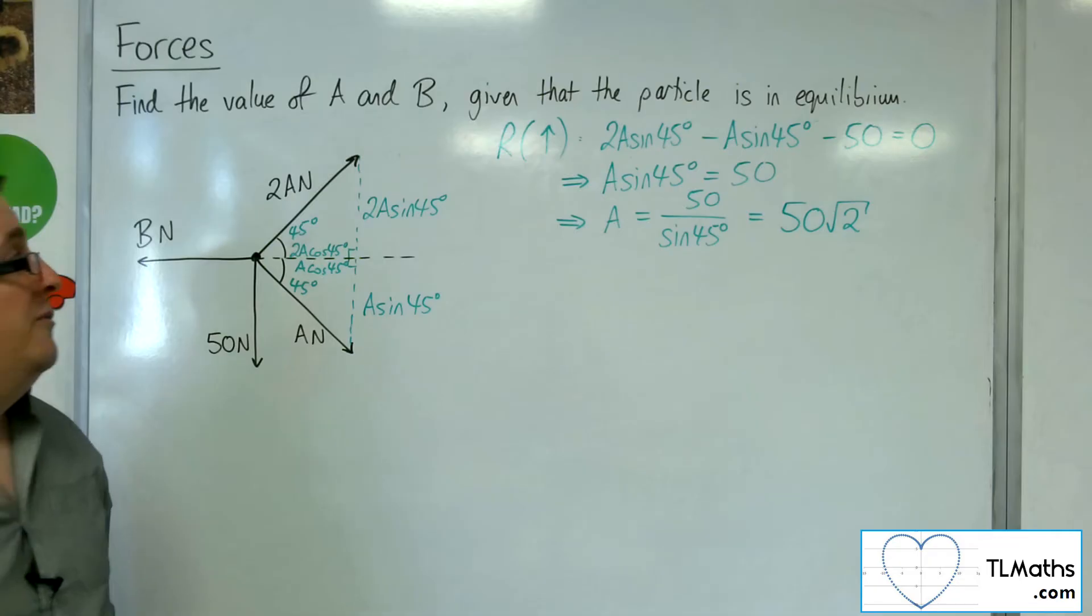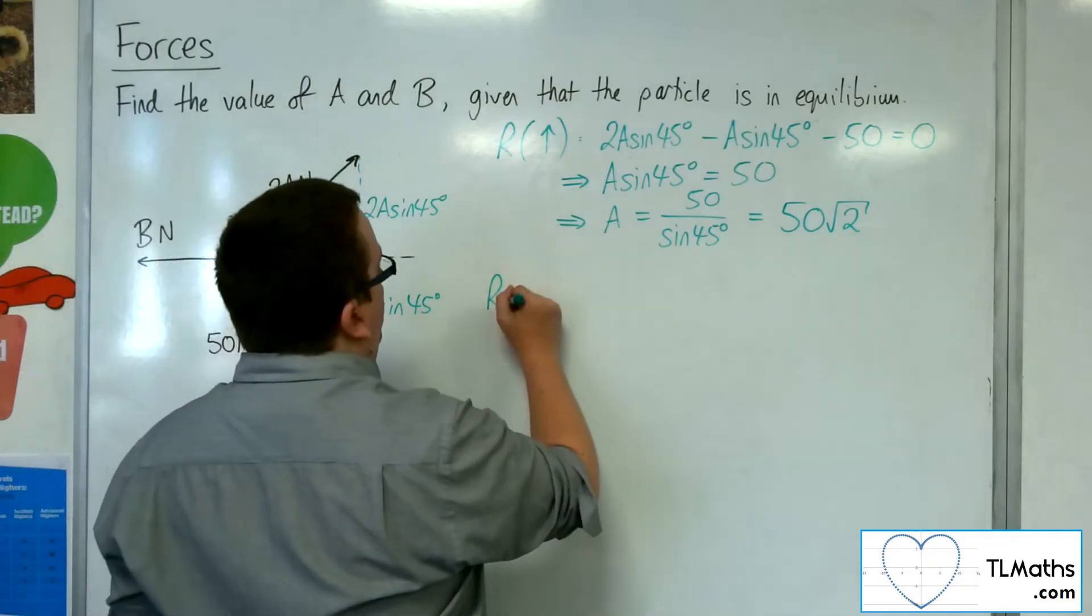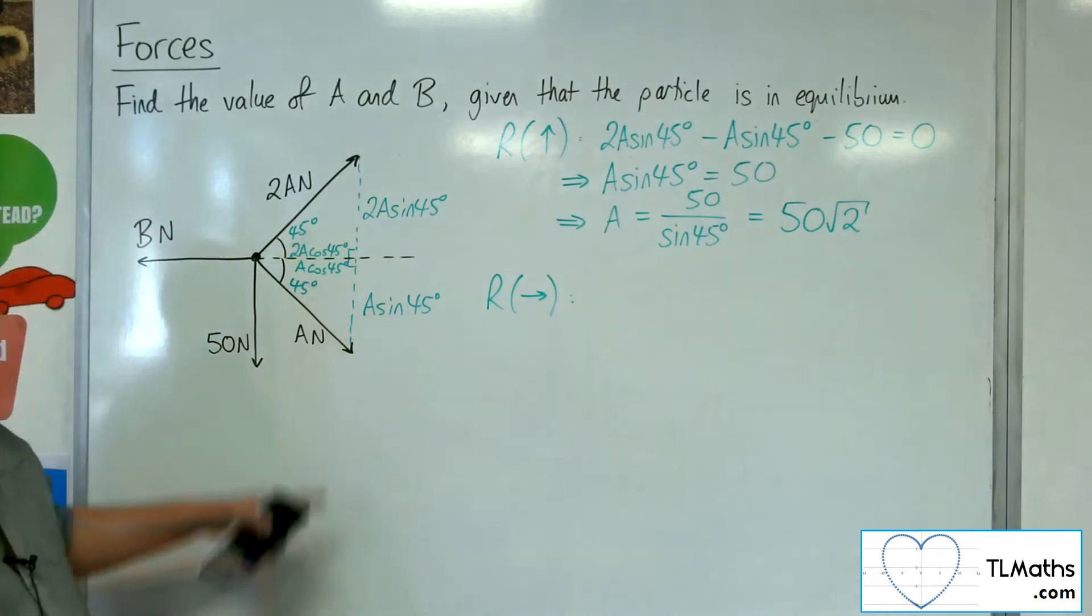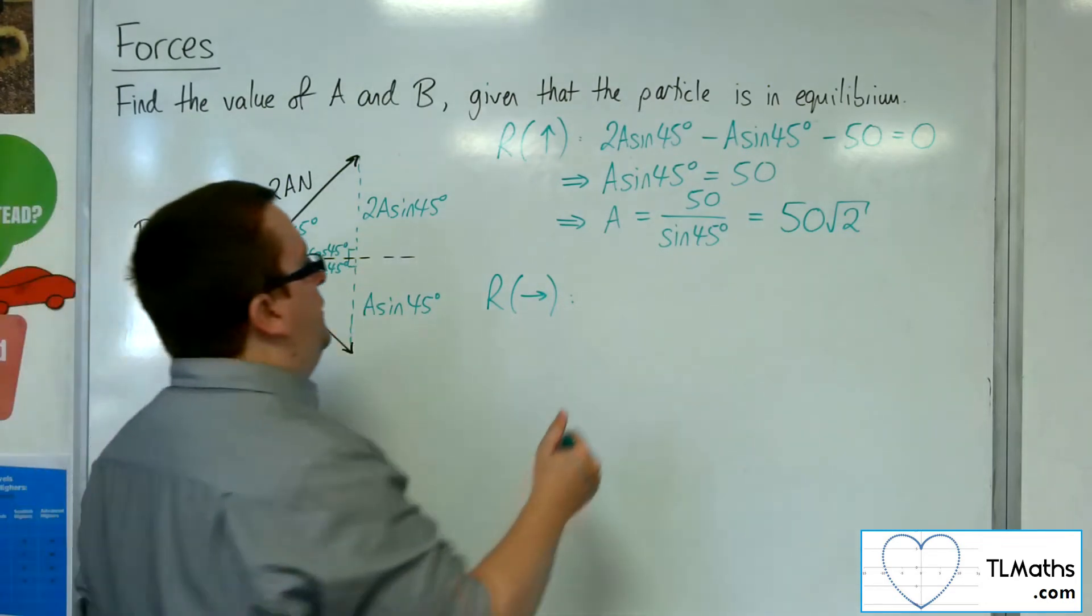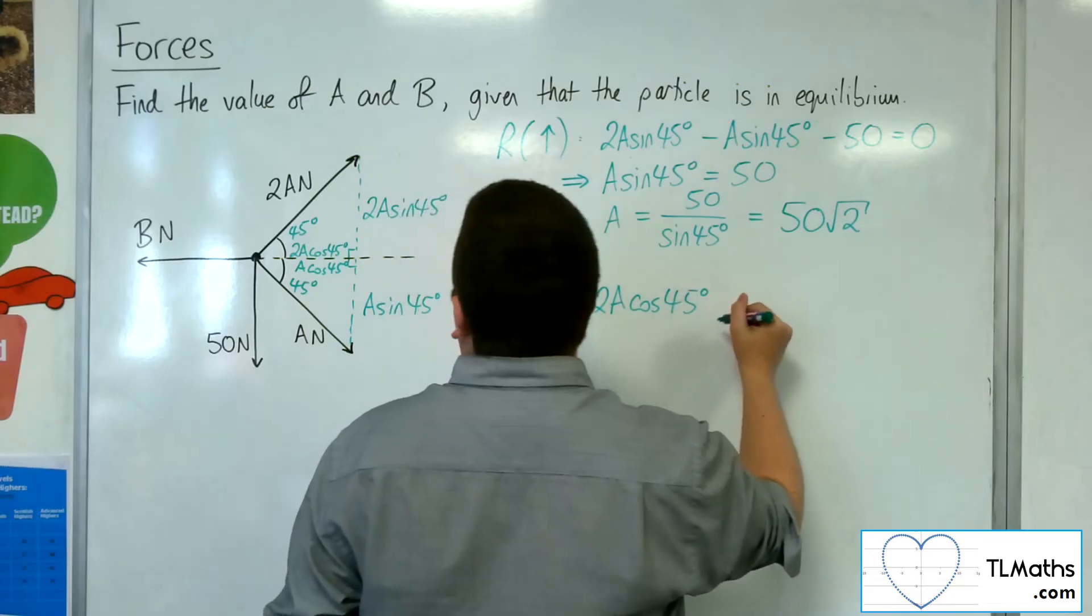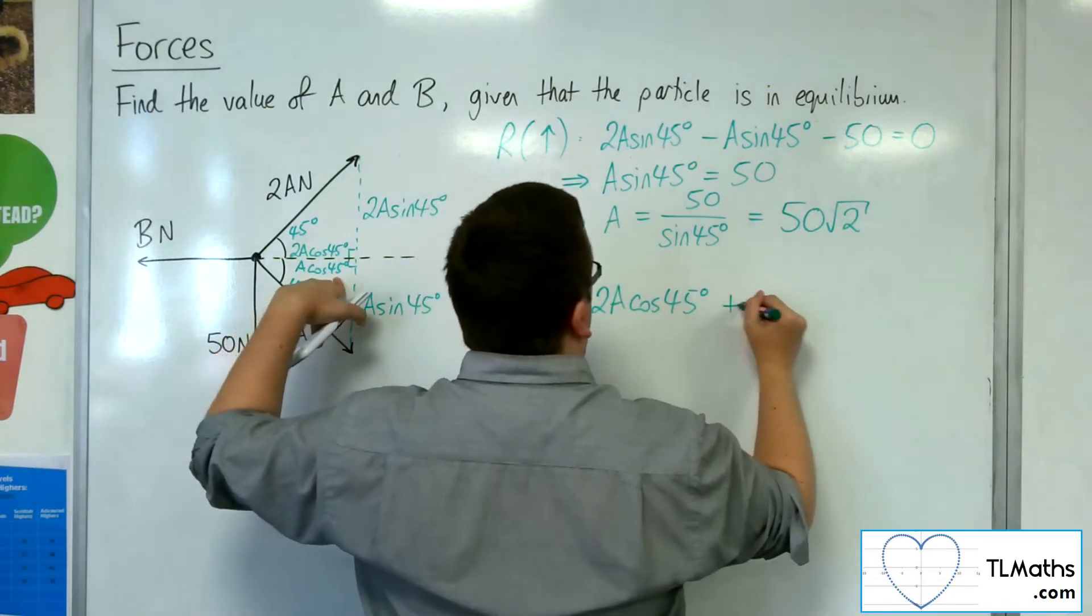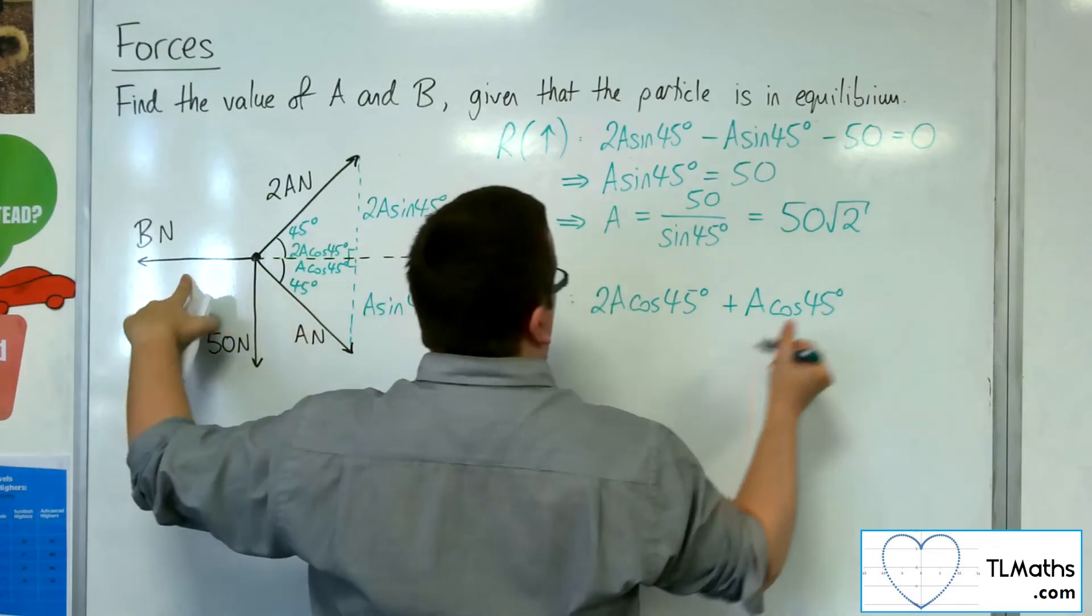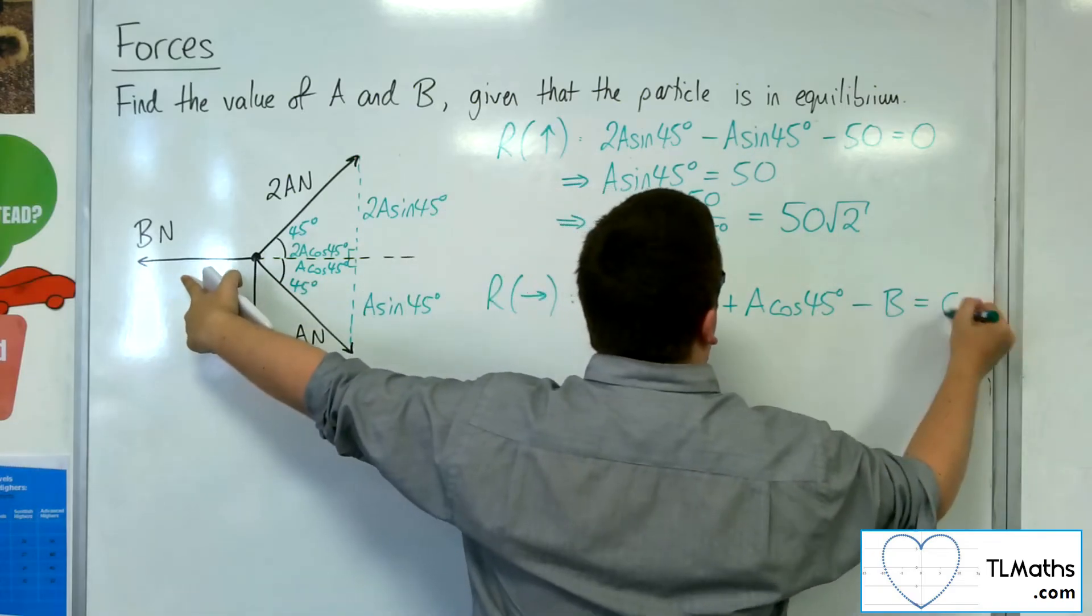Now, as for the value of B, if I resolve horizontally, taking to the right as positive, I've got the 2A cos 45, working to the right, and I've got A cos 45 as well. Take away B, because it's working against me, is zero.